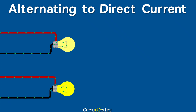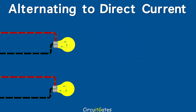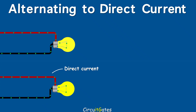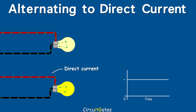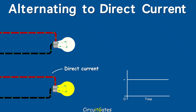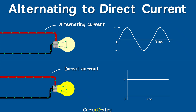Direct current and alternating current electricity are two types of electricity with currents and voltages that differ in magnitude and direction of flow. Direct current electricity is a type in which voltage and current flow in one direction and with a constant magnitude — current and voltage do not vary in magnitude in DC. Whereas alternating current electricity is a type in which voltage and current change in magnitude and direction of flow.